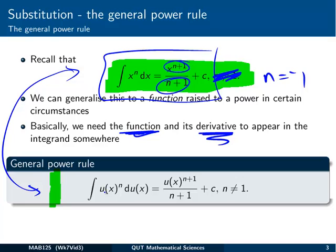But what we're saying is if we have some function u to the nth power, and then this weird looking thing, du of x. Well don't worry about that for the moment. I'll show you what I mean by that in the next couple of slides. But basically it means the derivative is in there somewhere.